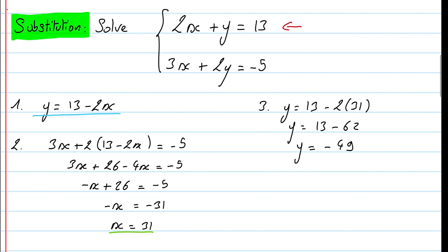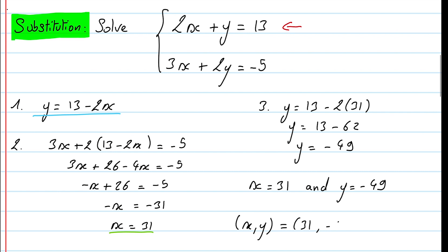Finally, we can write the solution as x equals 31 and y equals negative 49. Or we can write it as a coordinate pair: (x, y) equals (31, negative 49).